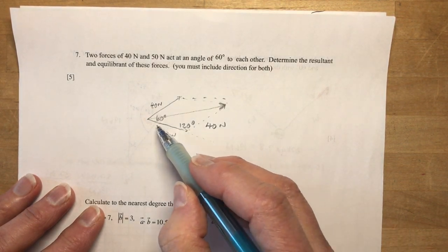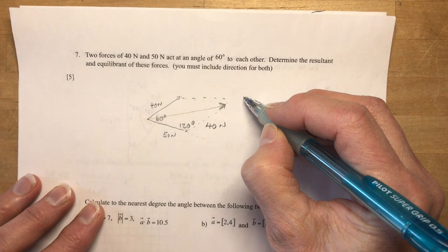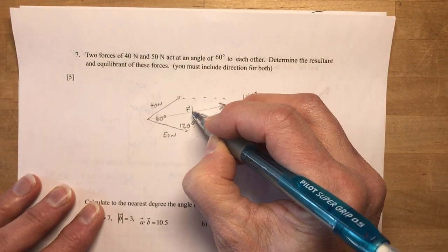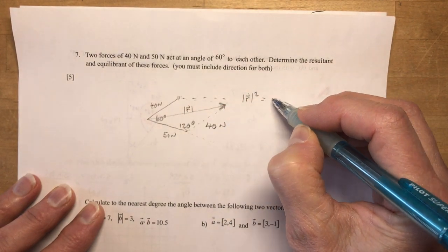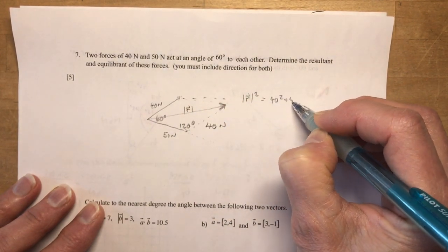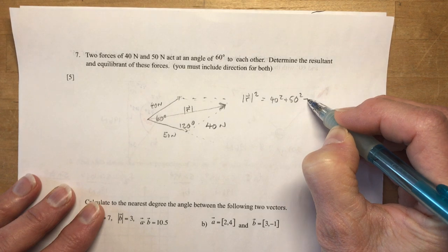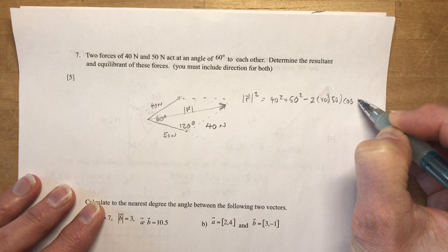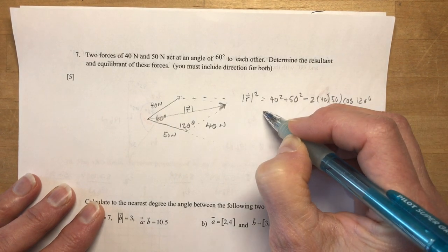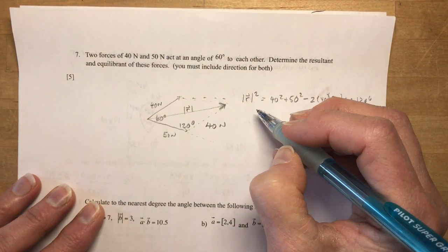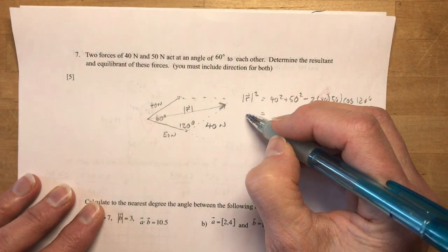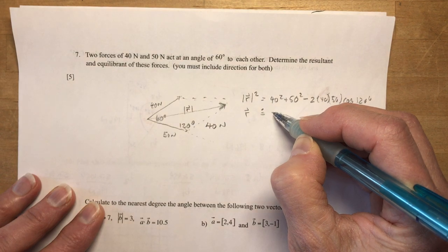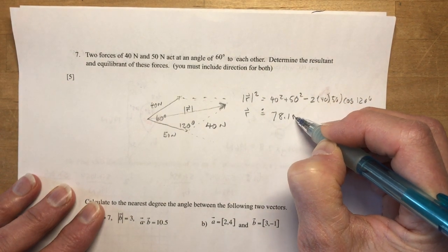So in order for me to calculate this resultant, I need to use the cosine law. So the magnitude of R squared is going to be 40 squared plus 50 squared. I bet you know the cosine law really well now. Minus 2 times 40 times 50 times the cosine. I can't even write fast enough of 120. And you should get R like it here. R is approximately equal to 78.1 newtons.